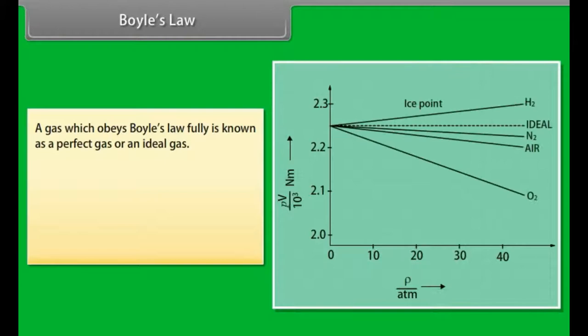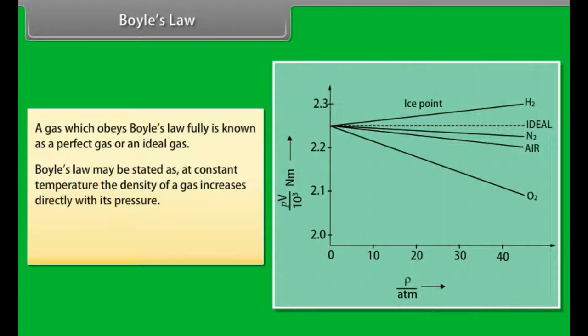A gas which obeys Boyle's law fully is known as a perfect gas or an ideal gas. Boyle's law may be stated as: at constant temperature, the density of a gas increases directly with its pressure. P over ρ equals constant.